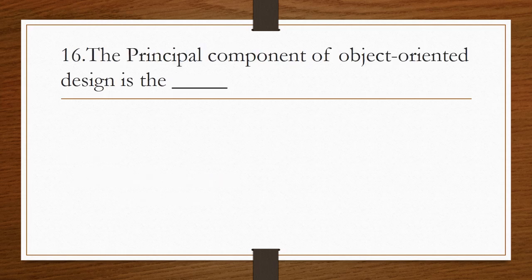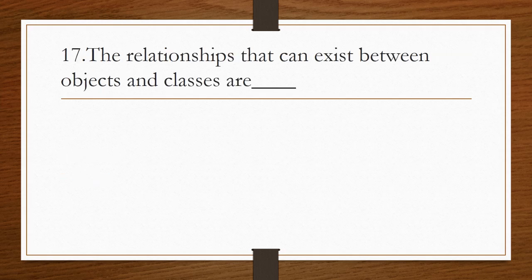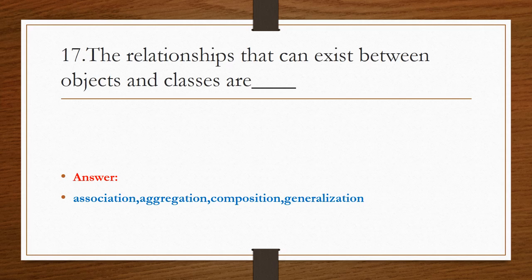The principal component of object-oriented design is the object. The relationships that can exist between objects and classes are: first one is association, second one aggregation, third one composition, and the fourth one is generalization.